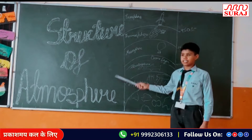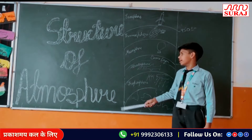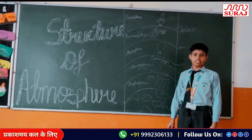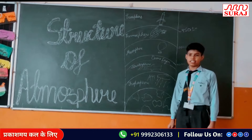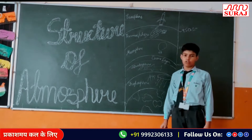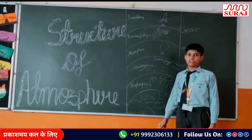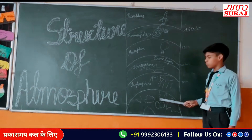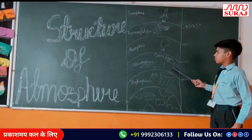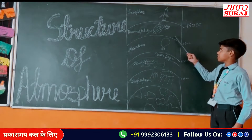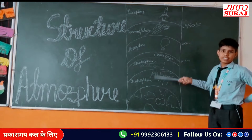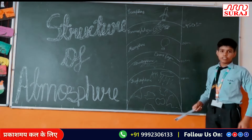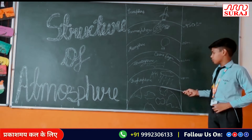Do you all know what is the structure of atmosphere? This is structure of atmosphere from class 7, and there are 5 layers for our topic. First we talk about the layers in structure of atmosphere: troposphere, stratosphere, mesosphere, thermosphere, exosphere. These are the 5 layers of the atmosphere.